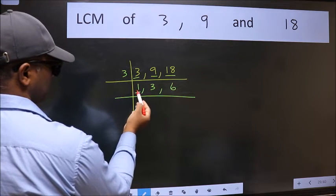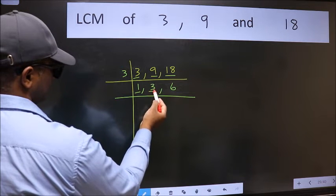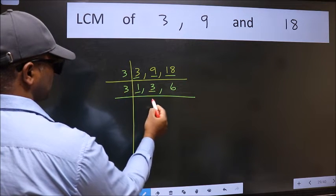Now we got 1 here. So focus on the next number 3. 3 is a prime number, so 3 into 3.